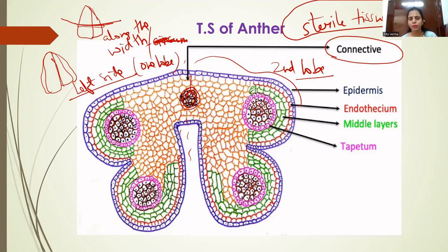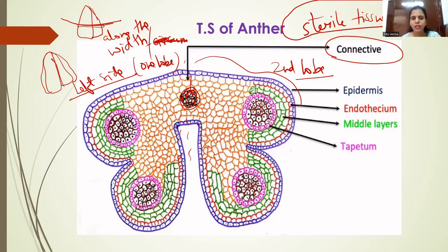Connective tissue is called sterile not because its cells are dead — these are living cells — but because being present in the anther, they do not take part in the process of reproduction. That means they do not participate in the formation of pollen grains. The only function of connective tissue is to join or attach the two lobes of the dithecal anther.